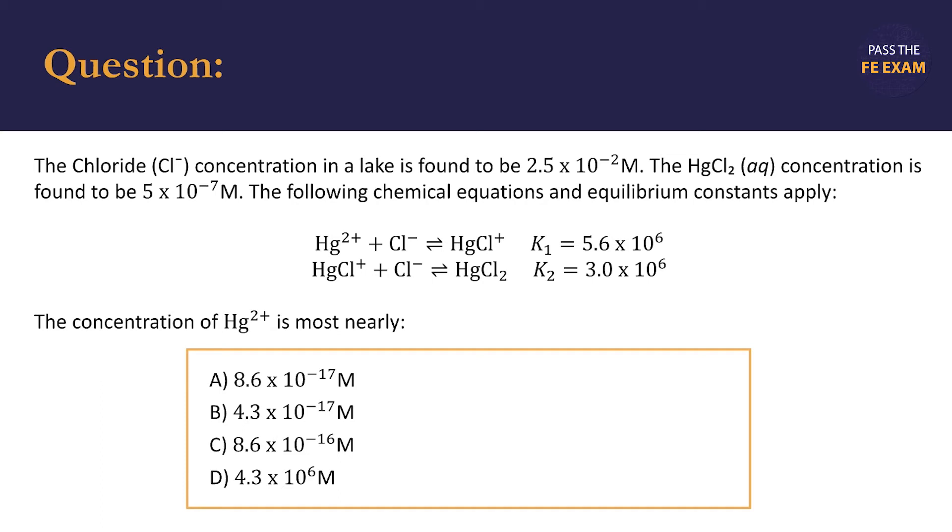We should note that we call this ionic compound, HgCl2, mercury 2 chloride, because as a transition metal, mercury can have different charges based on what it's bonded to. In this case, since chlorine can only have a single negative charge, it can only be Cl- or Cl-1, one mercury ion bonds to two chloride anions.